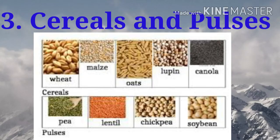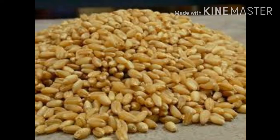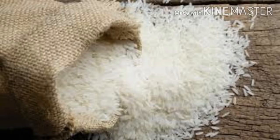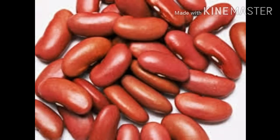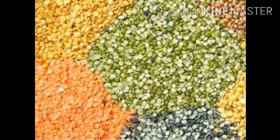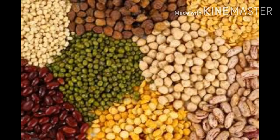Number three: cereals and pulses. Wheat, rice, and corn are seeds or grains that we get from plants. These are also known as cereals. Kidney beans, dals, and grams are seeds or pulses that come from plants.